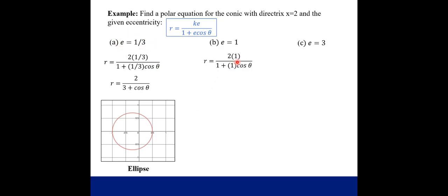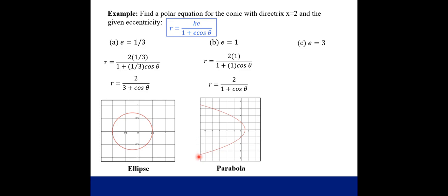The next one here, we just plug in that our eccentricity is 1, hopefully you remember with that eccentricity which type of conic we're working with. And if we simplify and then graph, we get a parabola.